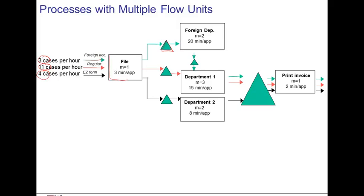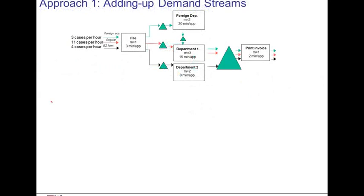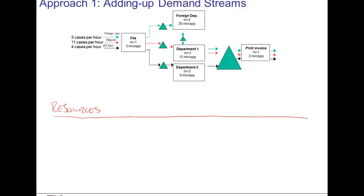How do we find the bottleneck in a process like this? This is arguably somewhat more complicated. We no longer can use the definition that the step with the lowest capacity is the bottleneck. The reason that definition no longer works is that one particular resource might have little capacity, but very few flow units may actually require service at that resource. Each resource in the process is a candidate for being the bottleneck — it could be the first step filing, the foreign department, department one, department two, or the printing department.